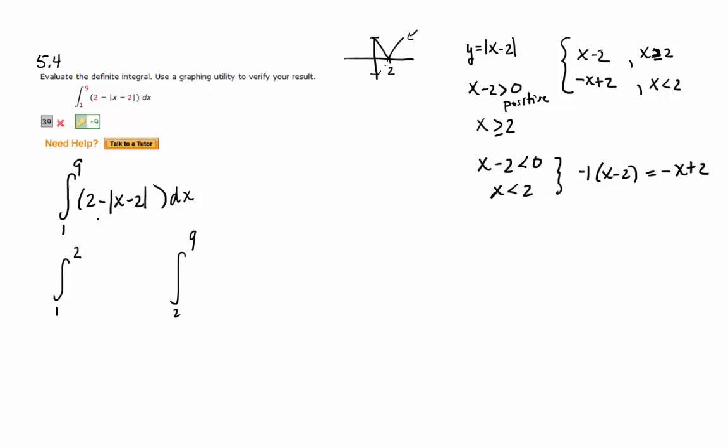So how would I rewrite this integral from 1 to 2? We're going to have 2 minus, it's the negative x plus 2 rule because x is less than 2. So you're going to say negative x plus 2, all of that dx.